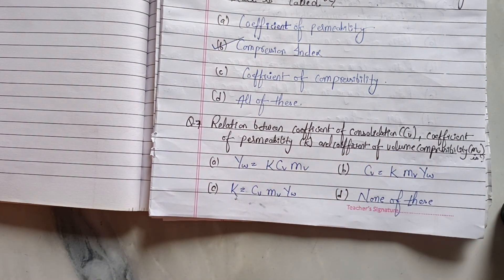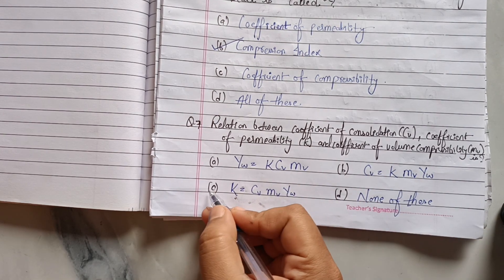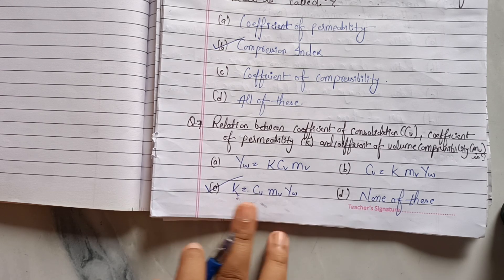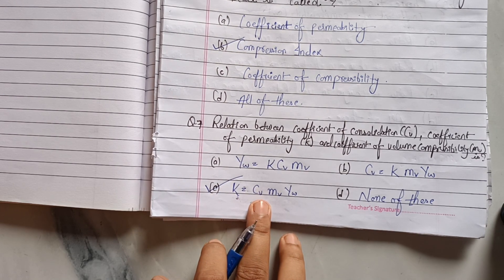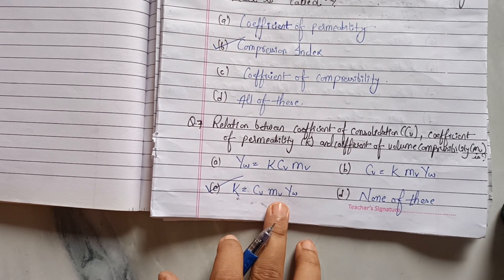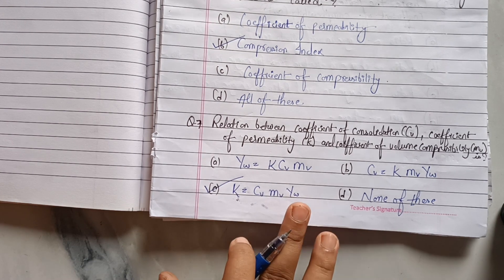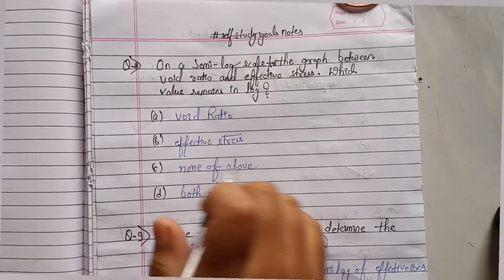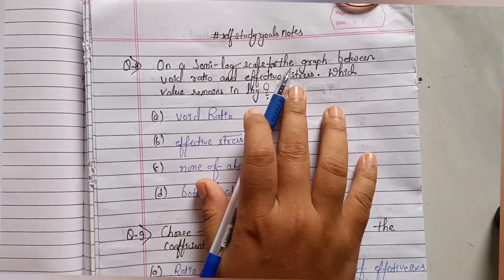Question seven: what is the relation between coefficient of consolidation, coefficient of permeability, and coefficient of volume compressibility? Option C is the correct option: coefficient of permeability k equals coefficient of consolidation cv multiplied by coefficient of volume compressibility mv multiplied by γw.